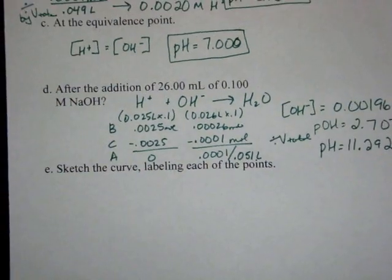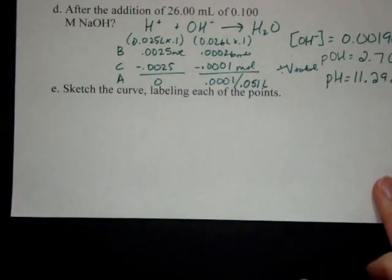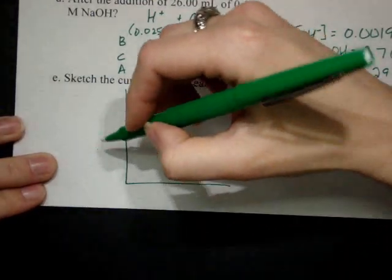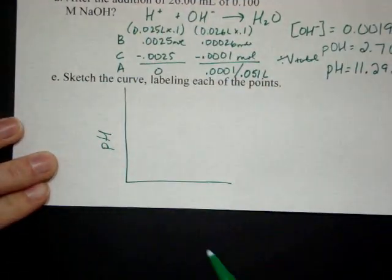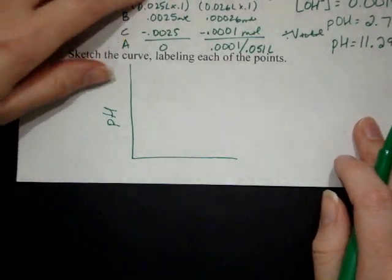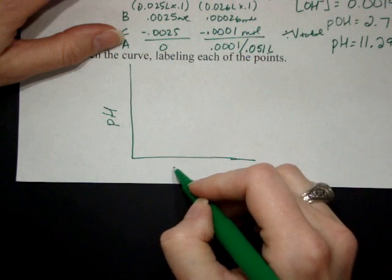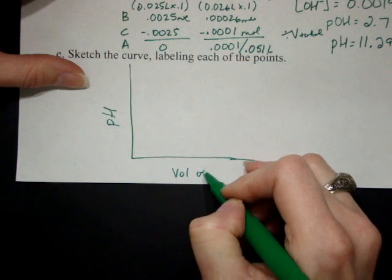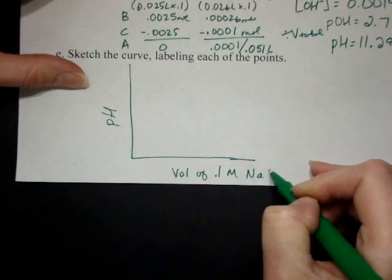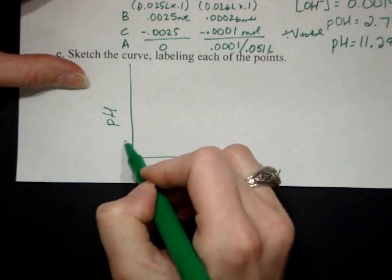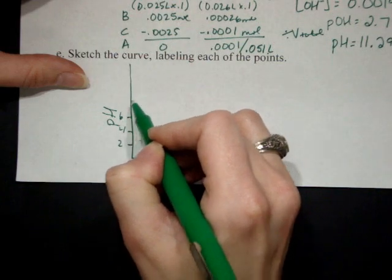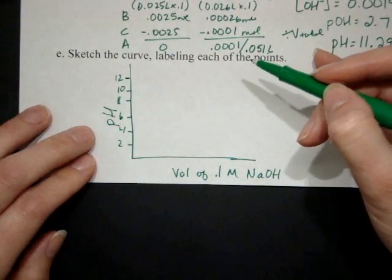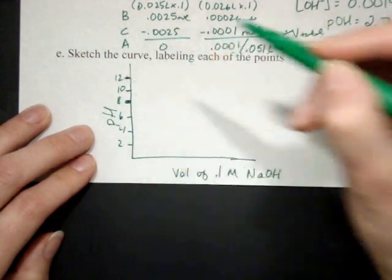Okay, the last part we have to look at is sketching the actual curve. So if we wanted to label the various points, when you're sketching the pH curves, you usually have the pH on the left side of the scale, and then you usually have your titrant added at the bottom. That's the stuff that's in the burette. So in this case, we are titrating with the sodium hydroxide. Okay, so we'll plot that 2, 4, 6, 8, 10, 12. So that's not perfect, but we'll get the general idea here.